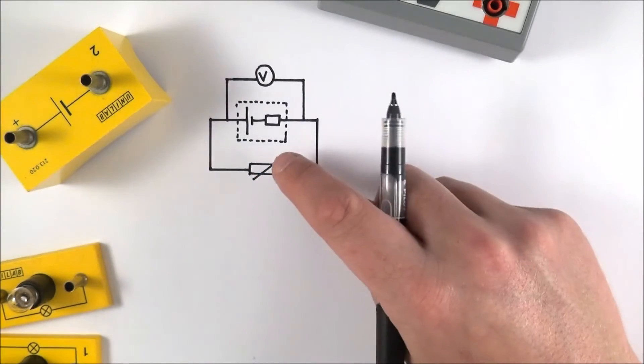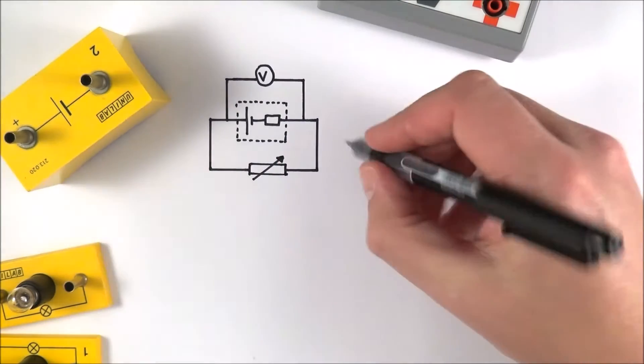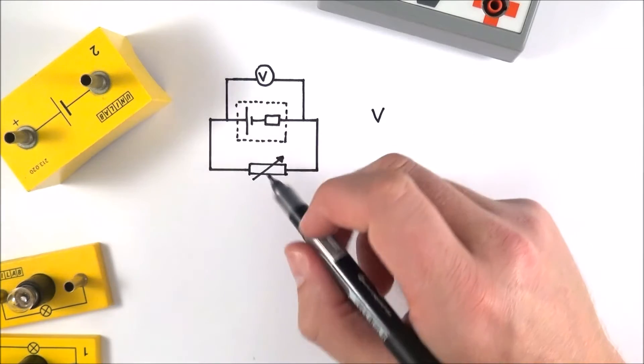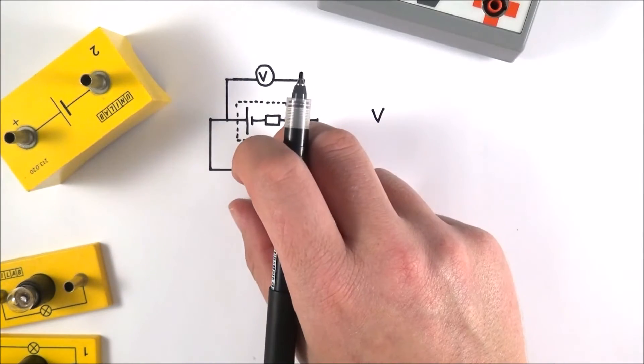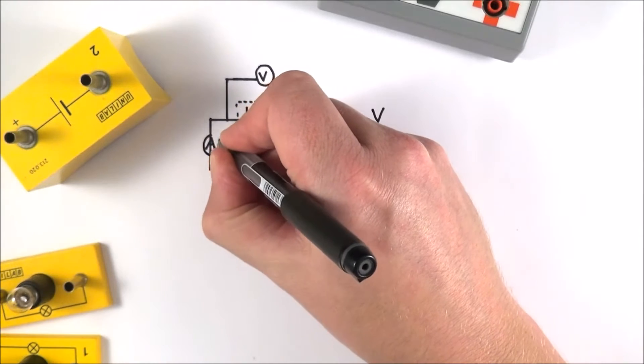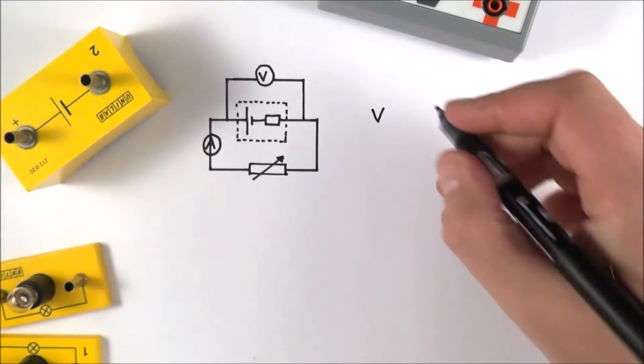You can record the terminal PD, which is V, and you can see how that changes as you have different resistances in the circuit. You measure the current using an ammeter.